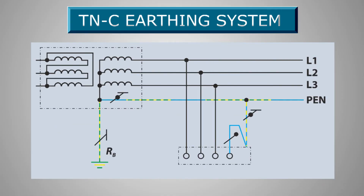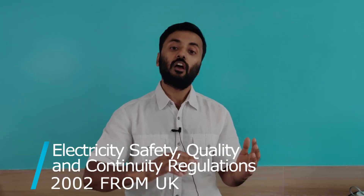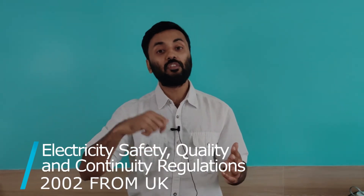The TNC earthing system: the neutral and protective earth are combined into a single conductor throughout the system. All the exposed and conductive parts of the installation are connected to the PEN conductor. As per Section 8-4 of the Electrical Safety Quality and Continuity Regulations from 2002 from the UK, a consumer shall not combine the neutral and protective functions in a single conductor in his customer's installation.